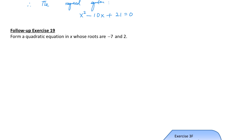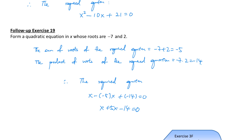Let's check the answer together. The sum of roots of the required equation is equal to negative 7 plus 2, which is equal to negative 5. The product of roots of the required equation is equal to negative 7 times 2, which is equal to negative 14. So the required equation is: x squared minus (sum of roots) times x plus (product of roots) equals 0.